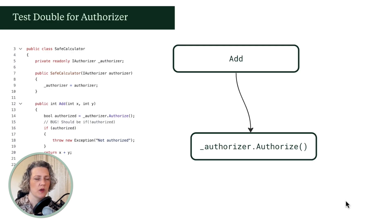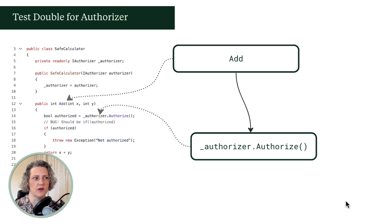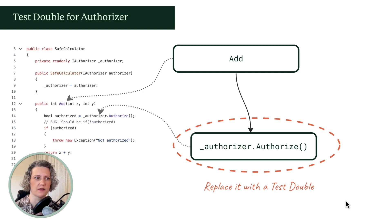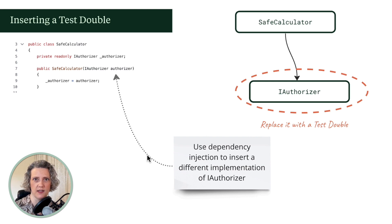Looking again at the code, we want to test the add function, and we've got a problem with this call to authorizer.authorize — that's what we want to replace with a test double, because using the real one is problematic. In the test case we'll call the add method as before, but we'll set it up so the SafeCalculator doesn't have a reference to the real authorizer. We'll use dependency injection by passing the constructor an alternative implementation that we control.